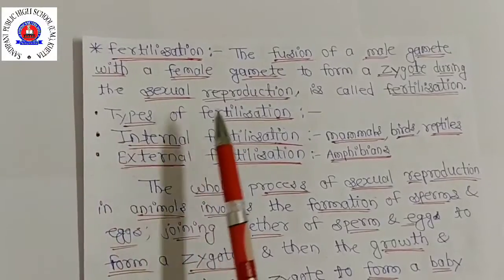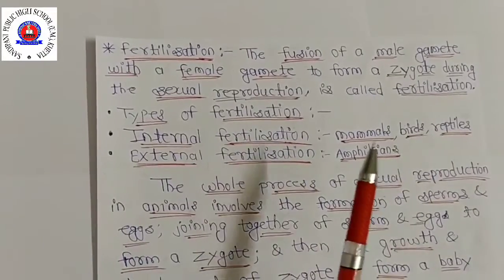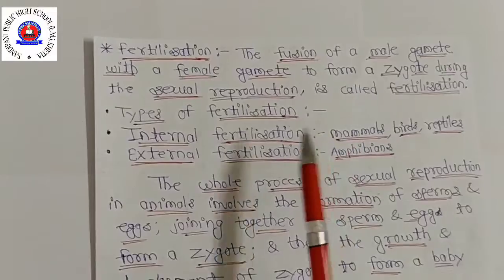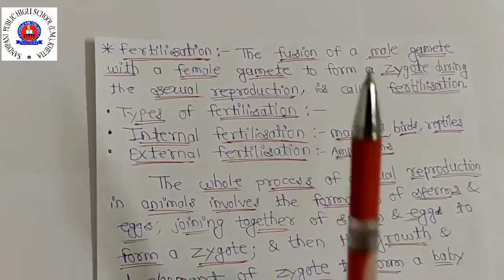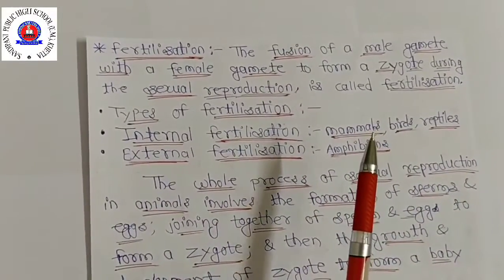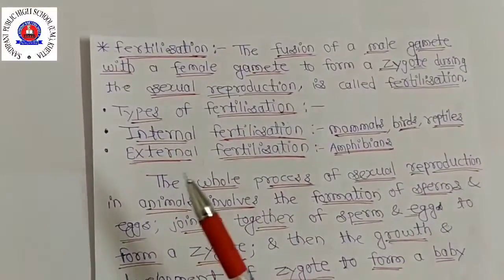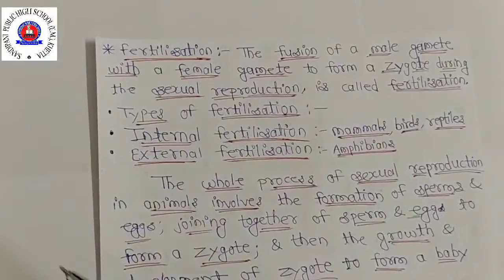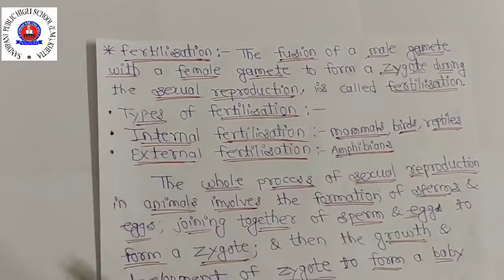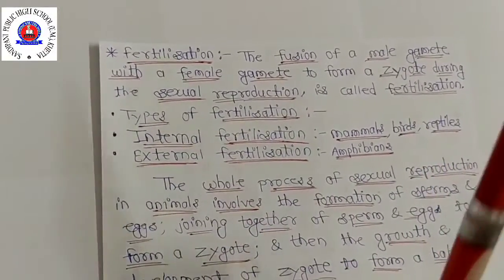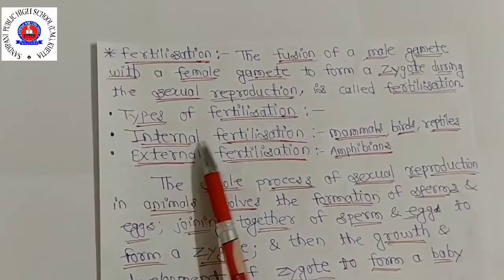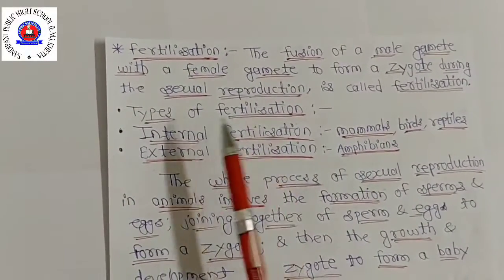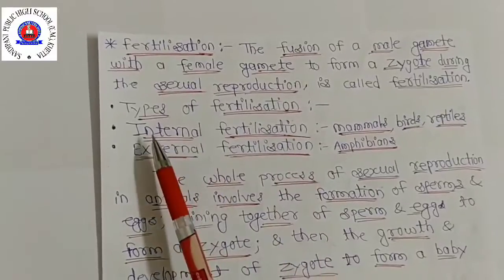We have just studied that the fusion of sperm with an ovum is called fertilization. The ovum is made in the body of the female animal. The fertilization of an egg by sperm can take place either inside the body of the female animal or outside its body. There are two modes of fertilization: internal fertilization and external fertilization.